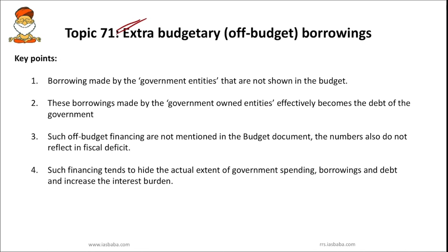Today's first topic: extra budgetary or off-budget borrowing. This topic is important because a big part of the union government's spending comes from outside the budget, which is referred to as extra budgetary resources. There have been a lot of debates and discussions, and experts have repeatedly raised the issue of India's fiscal deficit numbers being understated. Even last year, CAG highlighted that the central government's key deficit figures may be considerably higher than those stated in the union budget because of extra budgetary borrowings or off-budget borrowings.